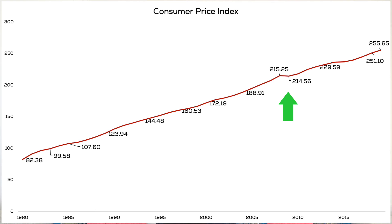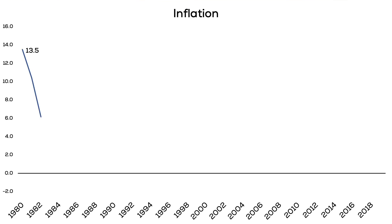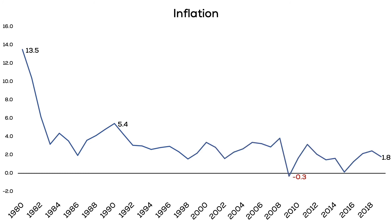We can easily change this graph to represent inflation. Here, we are plotting the percentage change in the CPI between each year. The early 80s experienced high levels of inflation — the inflation rate in 1980 was 13.5%. We can also clearly see the deflation of 2009 in this graph. In 2019, the inflation rate was 1.8%. Volatility in the price level creates uncertainty in the economy and makes planning more difficult.